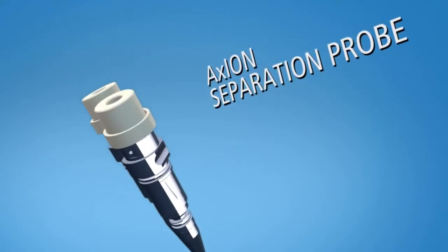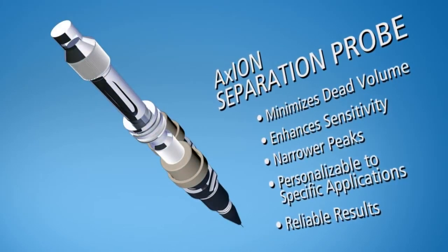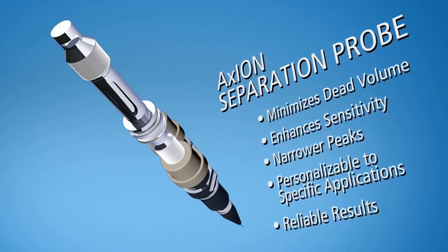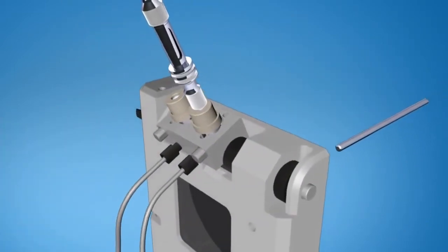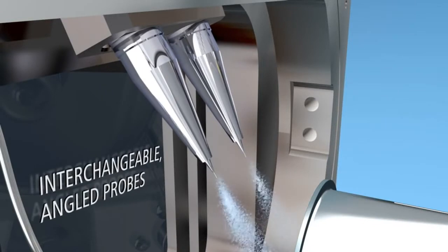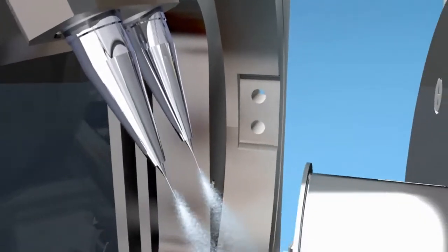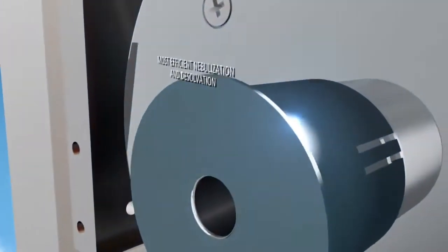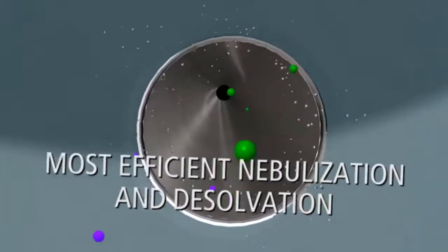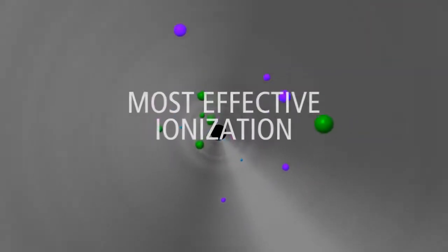Perkin Elmer's innovative Axion Separation Probe facilitates chromatography directly at the ionization source. The interchangeable angled ionization probes can be quickly and easily adjusted to optimize performance at any given flow rate for each personalized application. They also deliver the world's most efficient nebulization and dissolvation, generating the most effective ionization of any TOF system available.